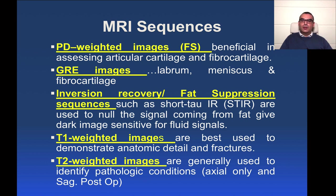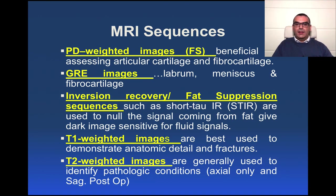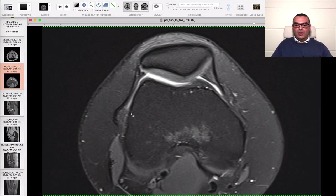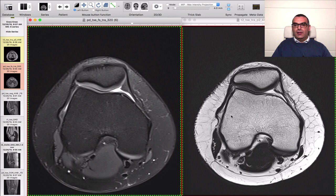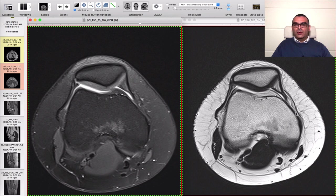Now let's jump from the sequences to a normal MRI case and I'll explain how to approach and examine the study in order to write a well-structured report. We start with the axial view. This is an axial proton density with fat suppression, and this is an axial T2 turbo spin echo image. We always include the axial T2 and the axial PD fat in all sequences.